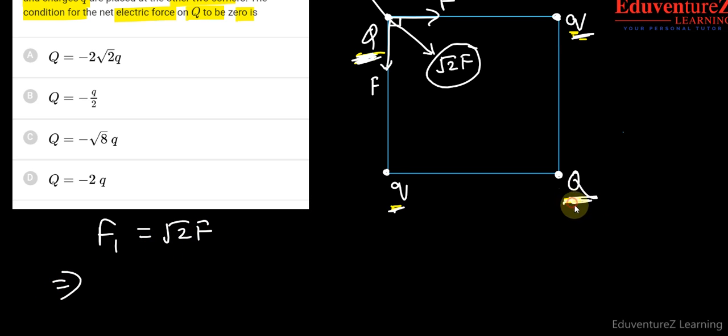F1 is the force between these two charges. So we can write it as K, Q1, Q2 divided by distance between them is the diagonal which is root 2A square. Suppose the side is A.